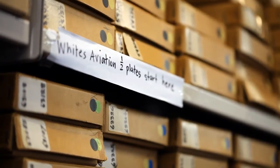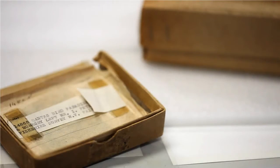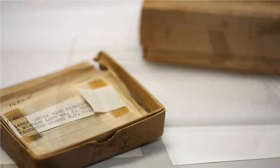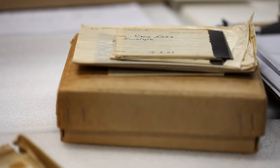The White's Aviation collection is one of the first to be digitised by the team. It is a large collection, numbering around 90,000 images and as well as film, many of the negatives are on glass plates of different sizes.